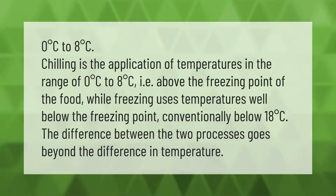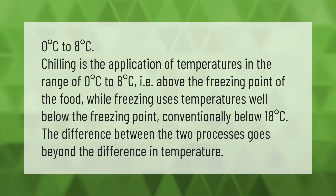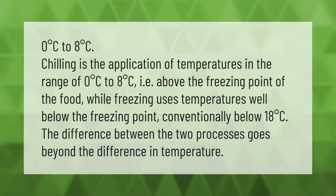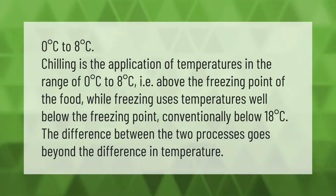Chilling is the application of temperatures in the range of zero degrees Celsius to eight degrees Celsius, i.e., above the freezing point of the food, while freezing uses temperatures well below the freezing point — conventionally below minus 18 degrees Celsius. The difference between the two processes goes beyond the difference in temperature.